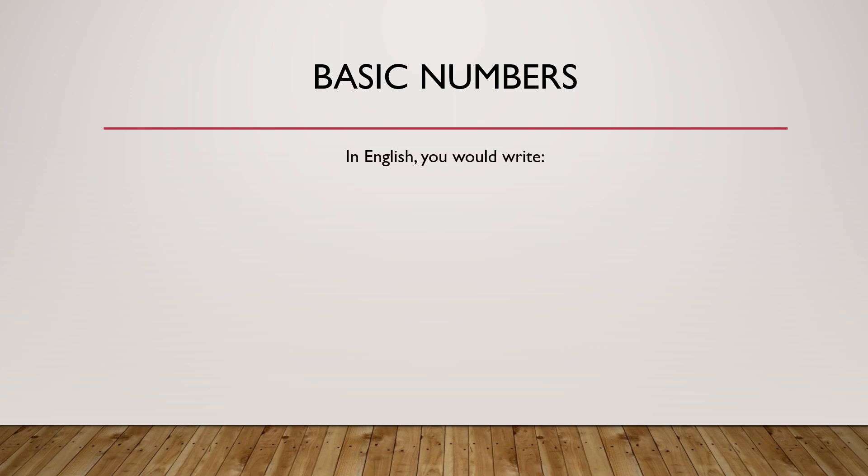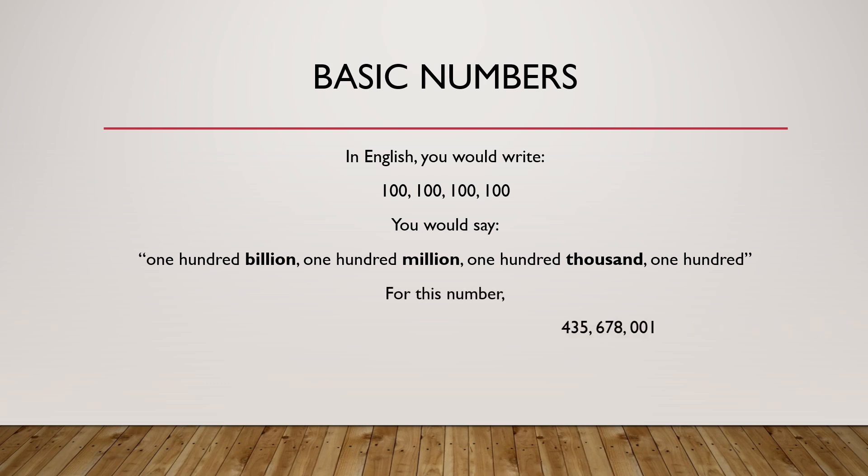In English, you would write with commas separating the number families. You would say one hundred trillion, one hundred billion, one hundred million, one hundred thousand, one hundred. For this number, you would say four hundred thirty-five billion, six hundred seventy-eight million, one hundred thousand.